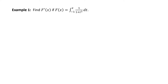Example: find f prime of x if f of x equals the integral from negative 1 to x of 1 over the quantity 1 plus t squared dt. By the Fundamental Theorem of Calculus Part 1, we get f prime of x is equal to 1 over 1 plus x squared.